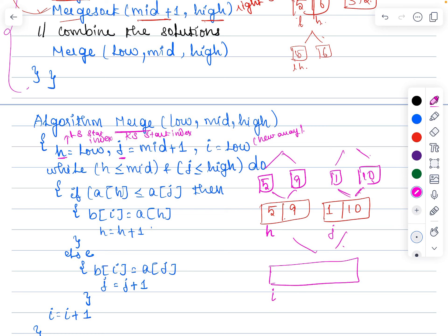In the loop condition it is checked whether h is lesser than or equal to mid, and j is lesser than or equal to high. The end point for the left sub-array is mid and the end point for the right sub-array is high. If h is lesser than or equal to mid or j is lesser than or equal to high, we start comparing array[h] and array[j]. Whichever is lesser must be written into the new array at position b[i].